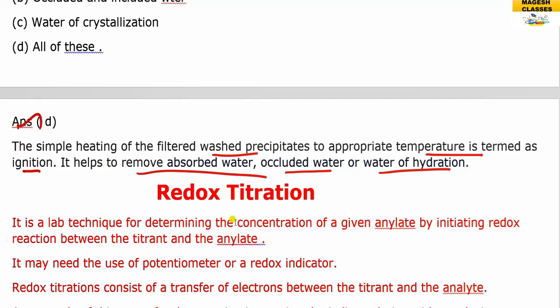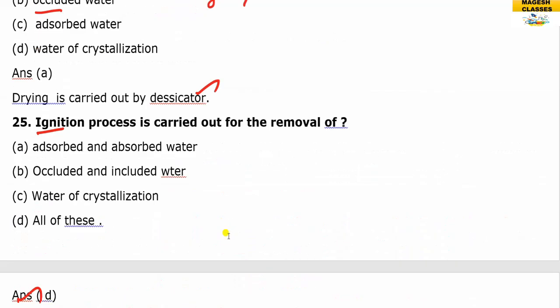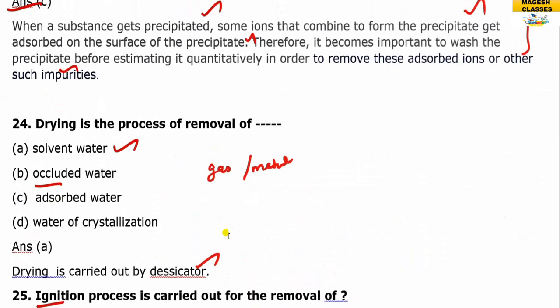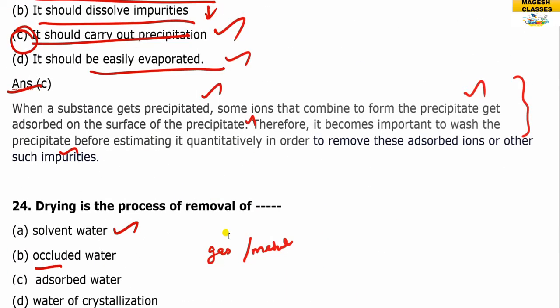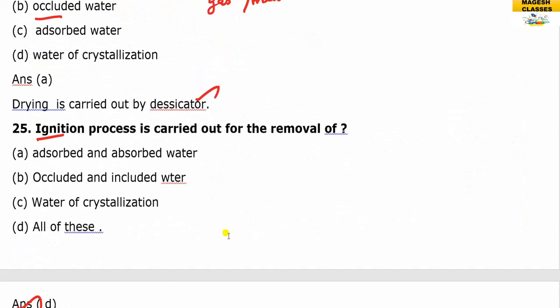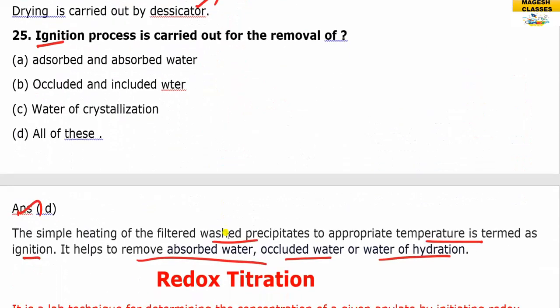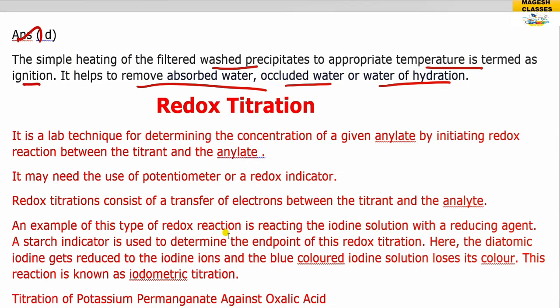Next is redox titration. In analytical chemistry, the syllabus covers conductometric, complexometric, redox, and gravimetric analysis, along with the principles of volumetric analysis.